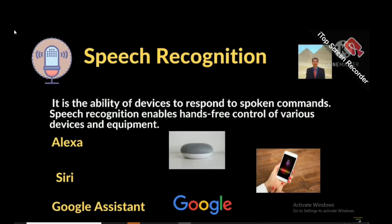If you ask Siri what is the temperature, it will answer what the temperature is now. Google Assistant — we can give voice commands for our searches and it will execute. If you say tell me about Kolkata, it will give information about Kolkata, or Delhi, or whatever you want.